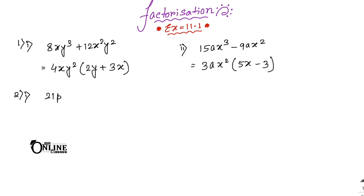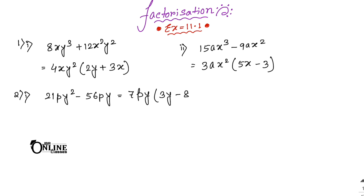Sum number 2.1: 21py² - 56py. The HCF of 21 and 56 is 7. Then p and y are common. So write down 7py. Inside the bracket: 3y minus 8. The answer is 7py(3y - 8).